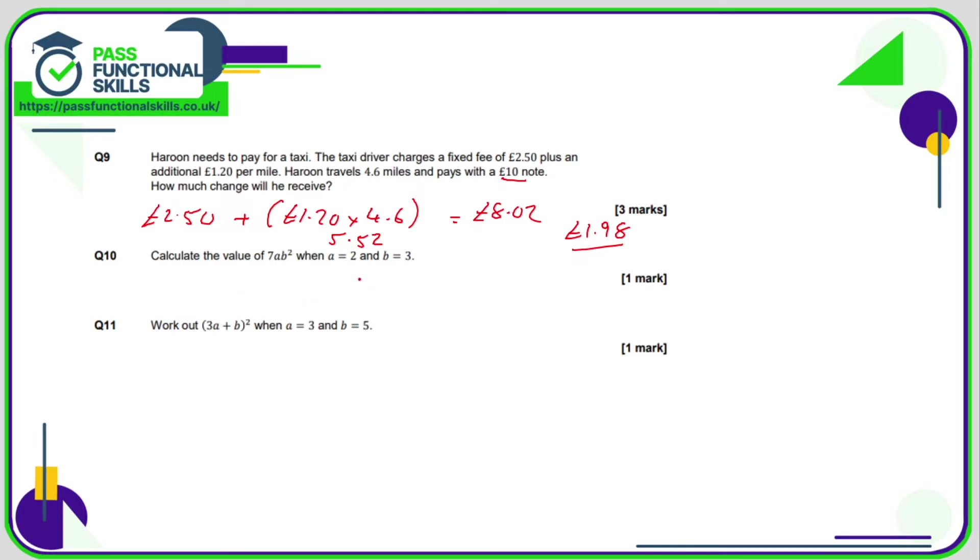Question number ten: we just need to substitute 2 in for a and 3 in for b. Now 7ab² means 7 times a times b squared, and b squared means b times b. So our calculation is 7 times 2 times 3 times 3. If you type that into the calculator you should end up with 126.